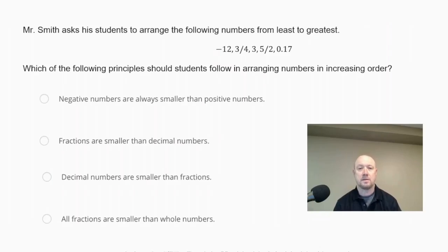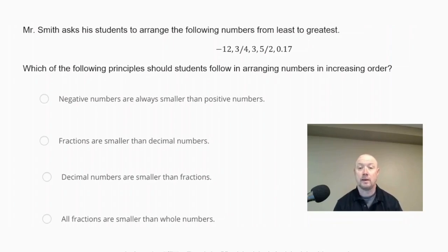Mr. Smith asks his students to arrange the following numbers from least to greatest: negative 12, three-fourths, 3, five-halves, and 0.17. Which of the following principles should students follow in arranging numbers in increasing order?